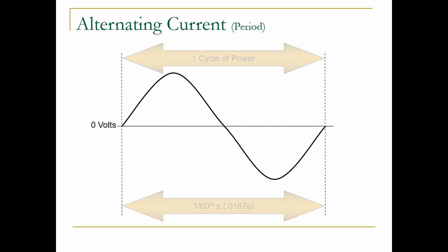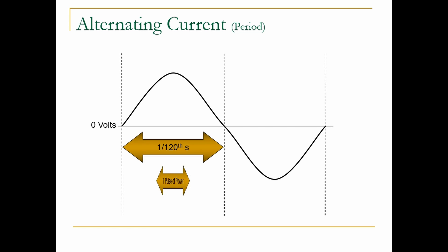In addition to timing, a second characteristic of power generation that is important to a radiographer is illustrated by drawing a second line dividing the cycle in half. This period represents 1/120th of a second, which is exactly one half of 1/60th of a second. This period is called one pulse of electricity.